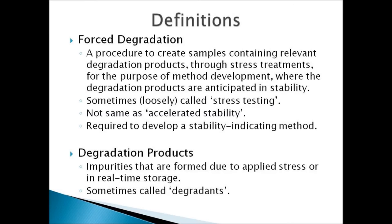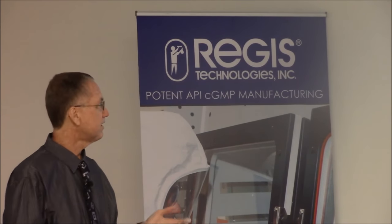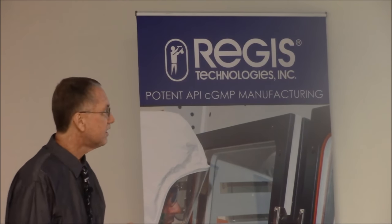Let's go with the definitions. The first one is forced degradation, which is a procedure to create samples containing relevant degradation products through stress treatments for the purpose of method development, where the degradation products are anticipated to be seen in stability studies. You do a worst-case scenario, hopefully, to predict anything that might happen in real-time stability studies. Sometimes, loosely, it's called stress testing — it's not the same thing as accelerated stability, which is a term used in stability study vernacular. Forced degradation is required to develop a stability-indicating method.